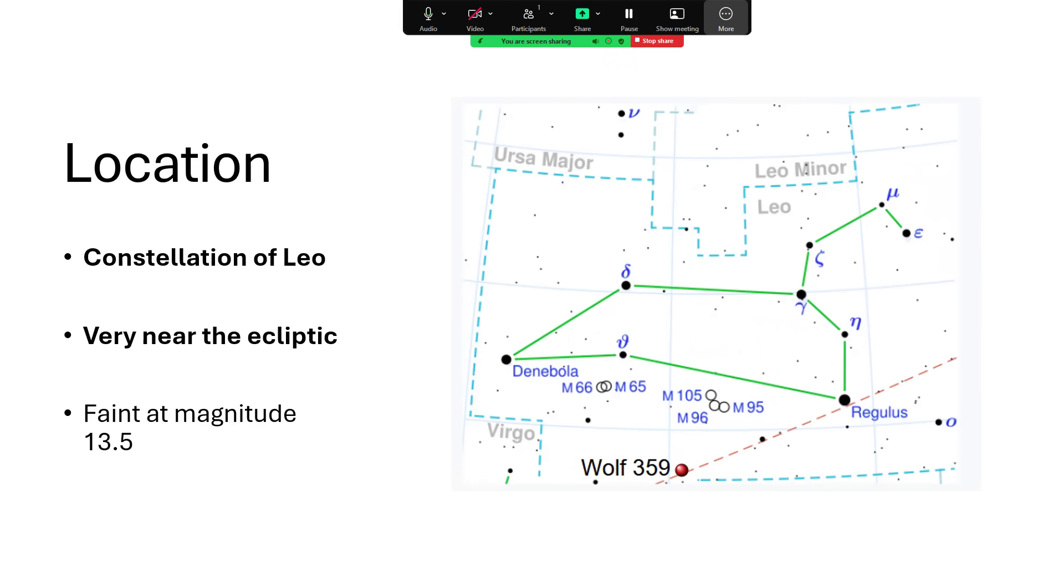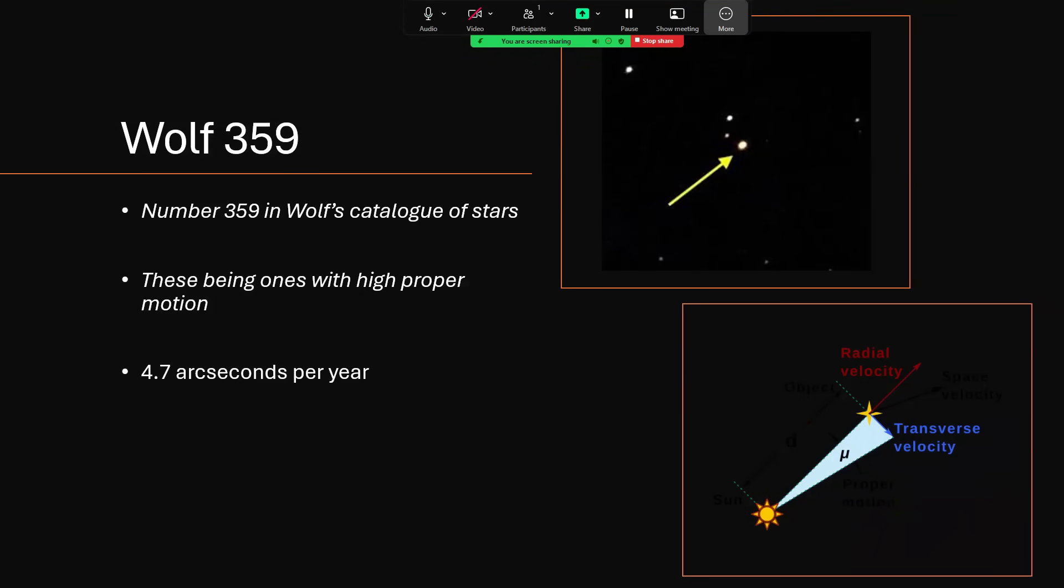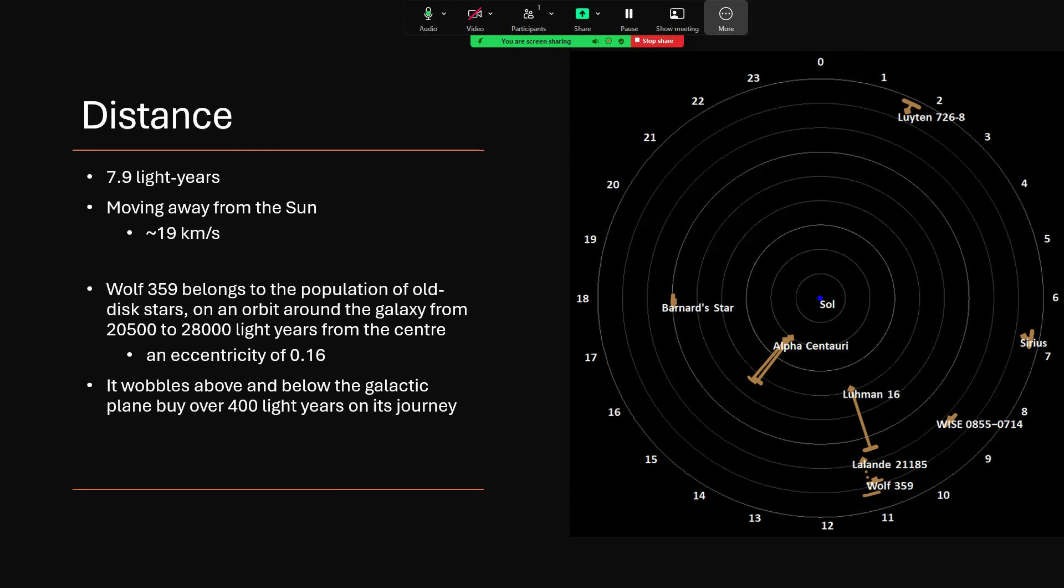And this star is very famous. It's Wolf 359, number 359 in Wolf's catalogue of stars that he made because they showed high degree of proper motion across the sky. So proper motion is where nearby stars seem to change their position year on year against the background of much more distant stars. And Wolf 359 was measured and recorded at 4.7 arc seconds per year. An arc second is a 60th of an arc minute, which is a 60th of a degree. These took very sensitive measurements to track down.